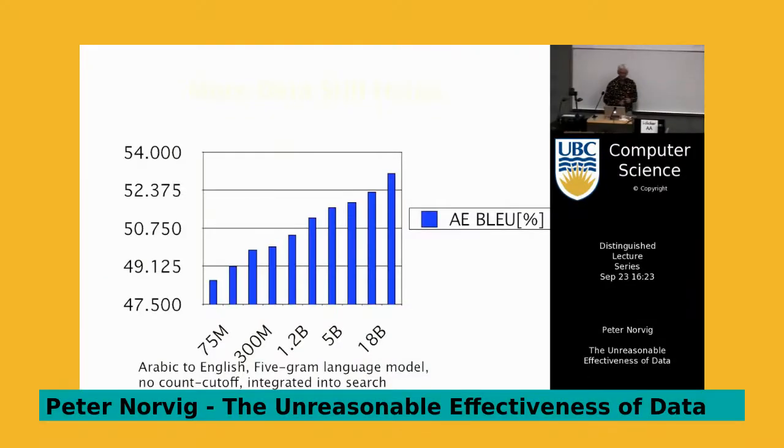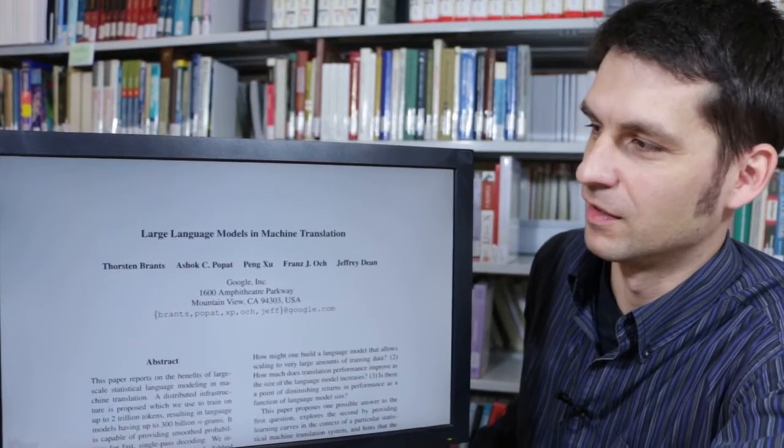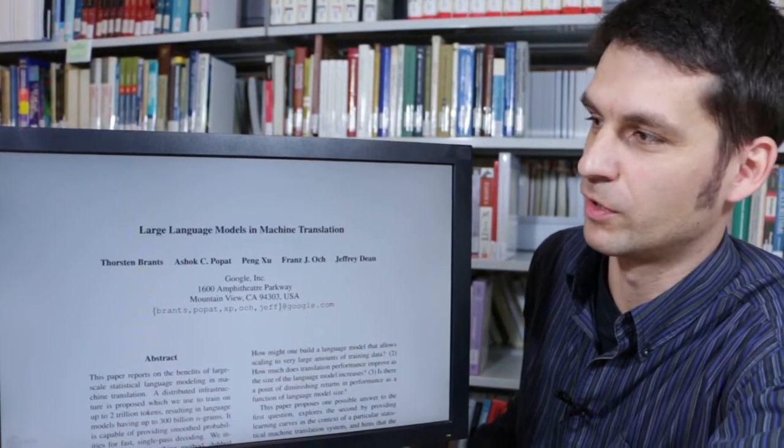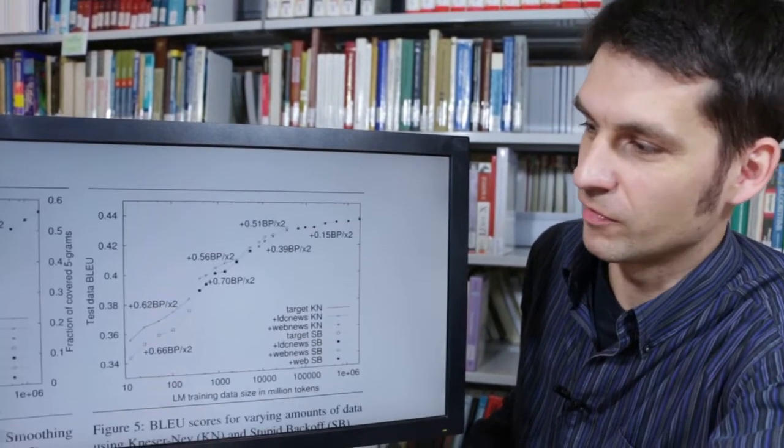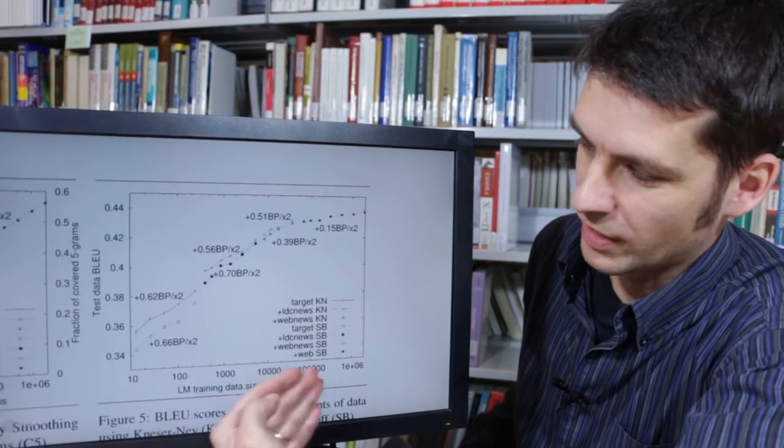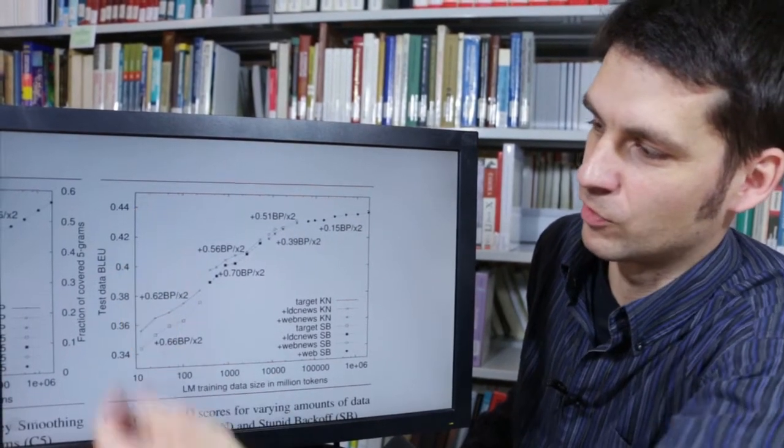And again. And here is just a graph proving the point again, that more data still helps. Here we have it in writing. This is one of the famous Google papers where they use all the English internet text to improve their translation quality. And obviously, the more text they fed in, the better the output quality was.